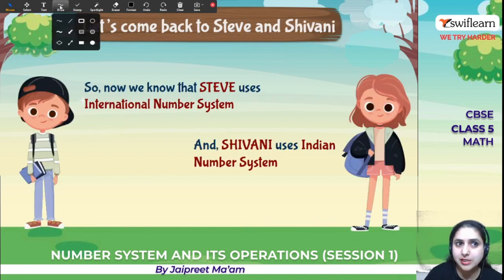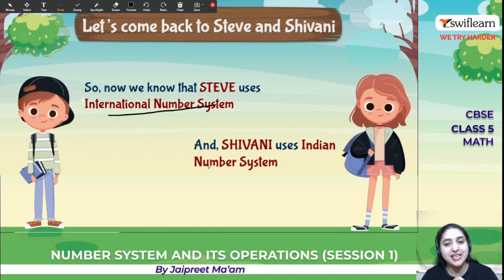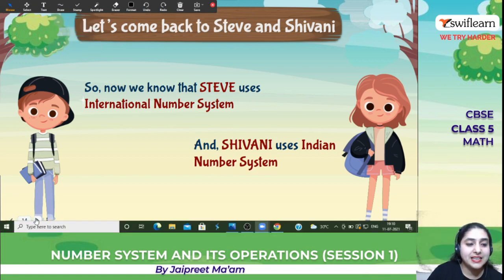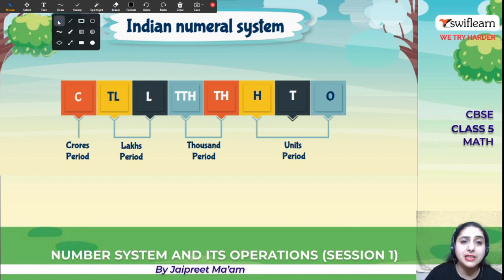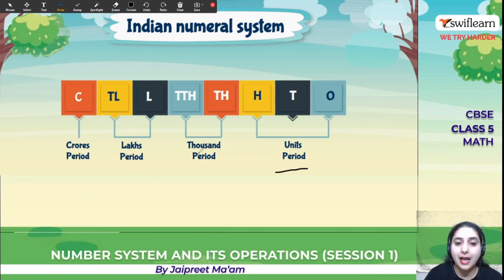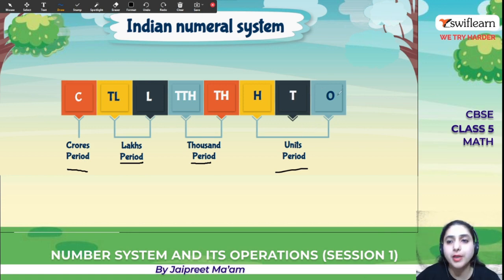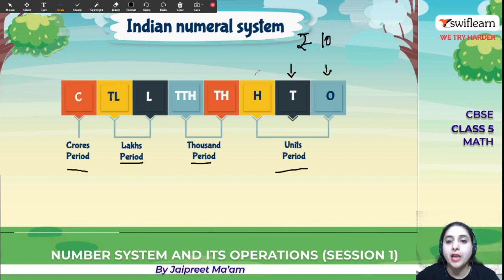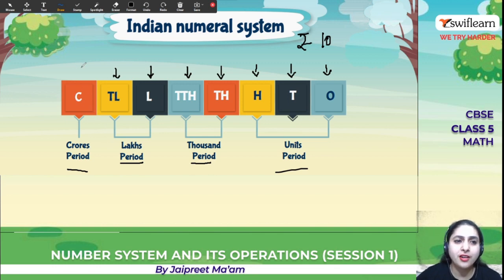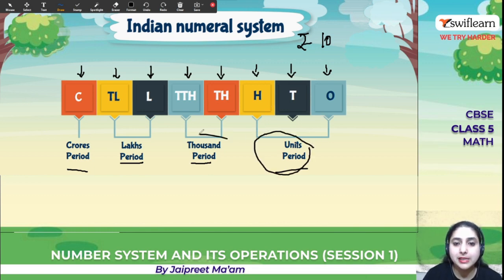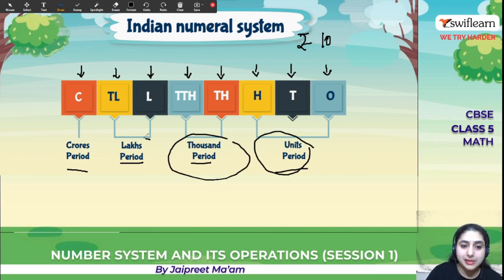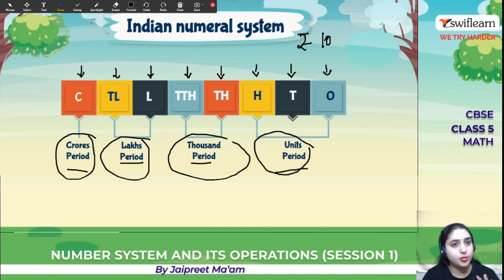In the Indian number system, we have the unit period, the thousands period, the lakh period, and the crore period. The unit period includes ones, tens, and hundreds. Then we have thousands, ten thousands — that makes the second period called the thousands period. The third period is the lakh period, and the fourth is the crore period.